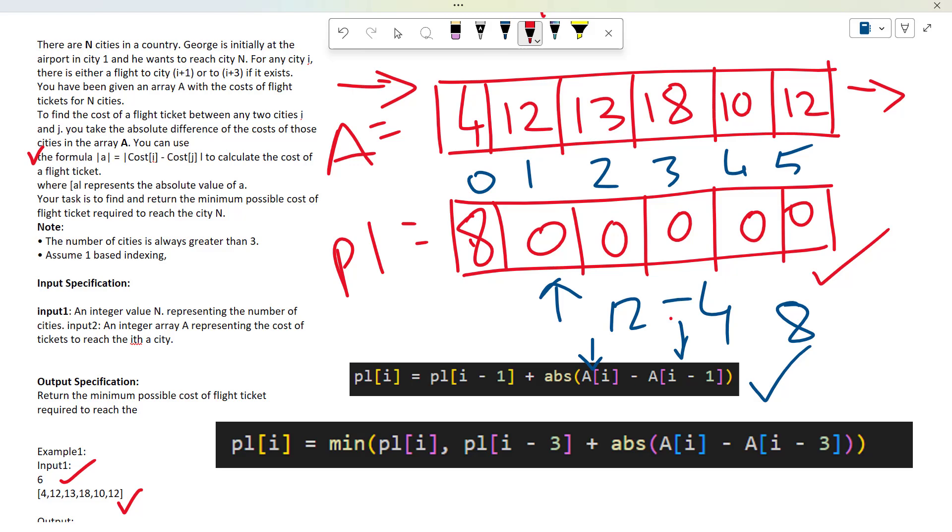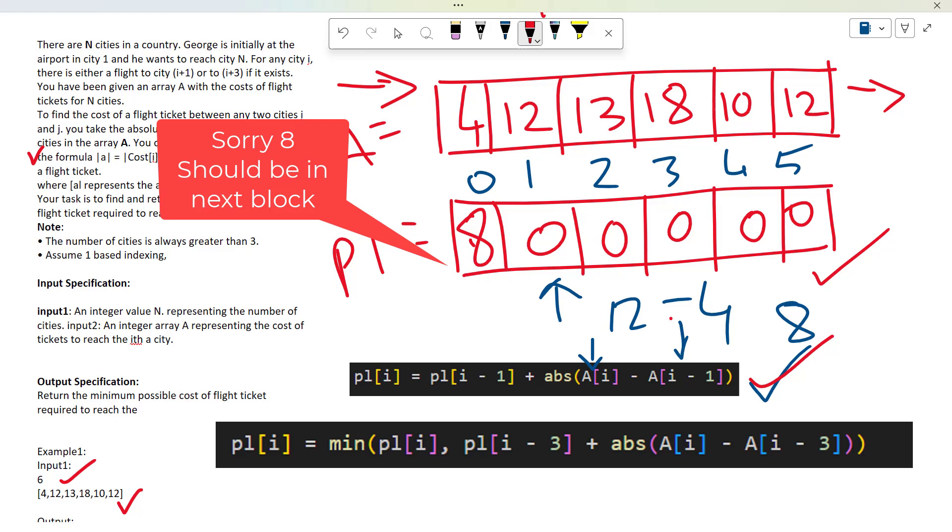This is the first formula which tells us what will happen if we move one step forward and what the price will be. This is the first formula, but we have a second formula.